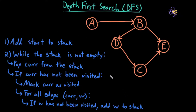The algorithm is essentially identical to BFS, breadth first search, with one key exception. In breadth first search we kept track of the nodes to explore using a queue, whereas in depth first search we use a stack. It turns out this single change takes us from BFS to DFS.